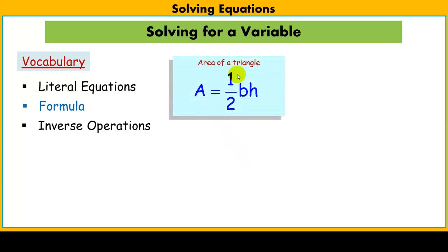For example, area of a triangle. That's a literal equation, it's a formula. That basically says to define the area, it's one half base times the height. So you need to know the base and the height to figure out the area.